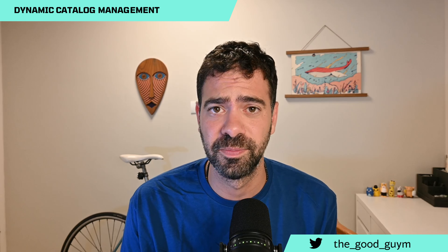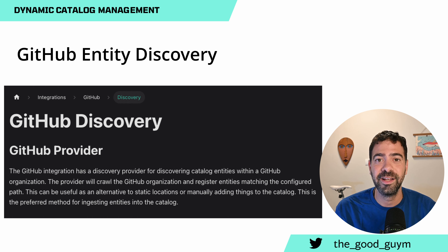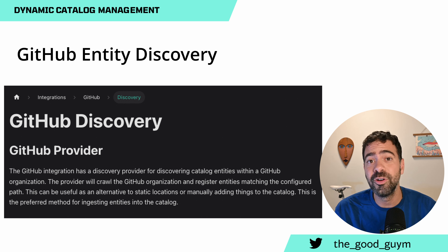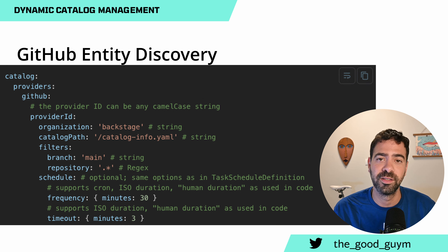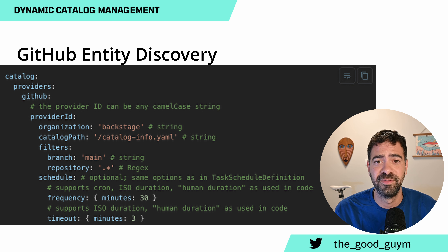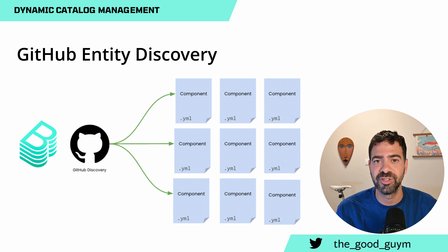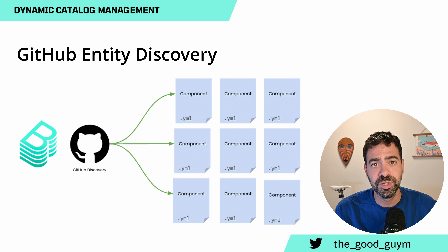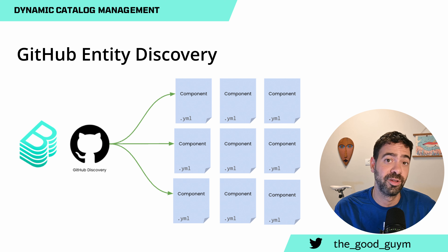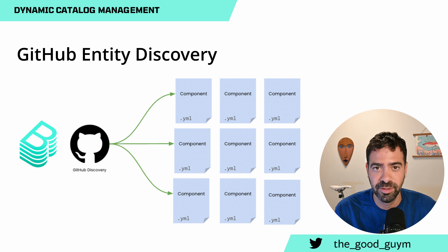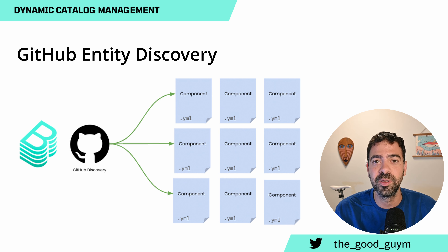By now you should ask yourself — are you the only one trying to solve this problem? The answer is no. In Backstage, there is a plugin called Git Entity Discovery. Using a very simple configuration, this process can crawl through your entire organization on GitHub. You can define which directories and files to crawl, and it offers a vast, flexible configuration. It will automatically fetch all the information across your organization — no pushing, no pulling with your own cron job, and no managing location files.